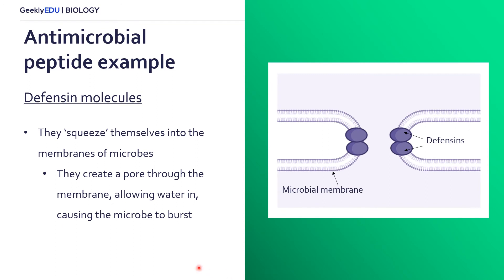Broadly, what defensins do is they are soluble, which means that they dissolve in water. What they can then do is put themselves or squeeze themselves into the membranes of microbes. When they do this, they create a pore through the microbial membrane, which allows water to rush into the microbe and causes it to burst and die. If we look at this figure, in the dark purple we have defensins which have squeezed themselves into the microbial membrane — shown here is our lipid bilayer, which is what creates a membrane. At the bottom is the inside of the microbe and here is outside. Due to physics, we'd have higher water pressure here, so it rushes into our microbe and then bursts it or kills it.